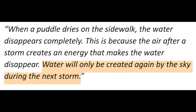Finally, the student says that the water will only be created again by the sky in another storm. This shows that the student has identified the source of the water as the sky or a storm in the form of precipitation. However, the student does not yet have an accurate idea of how the water gets from the ground in things like puddles back up to the sky in things like clouds and storms.